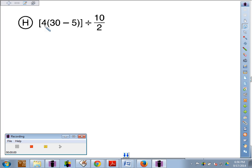Middle column, letter H. We've got inside brackets 4 times the quantity 30 minus 5, all divided by 10, divided by 2.